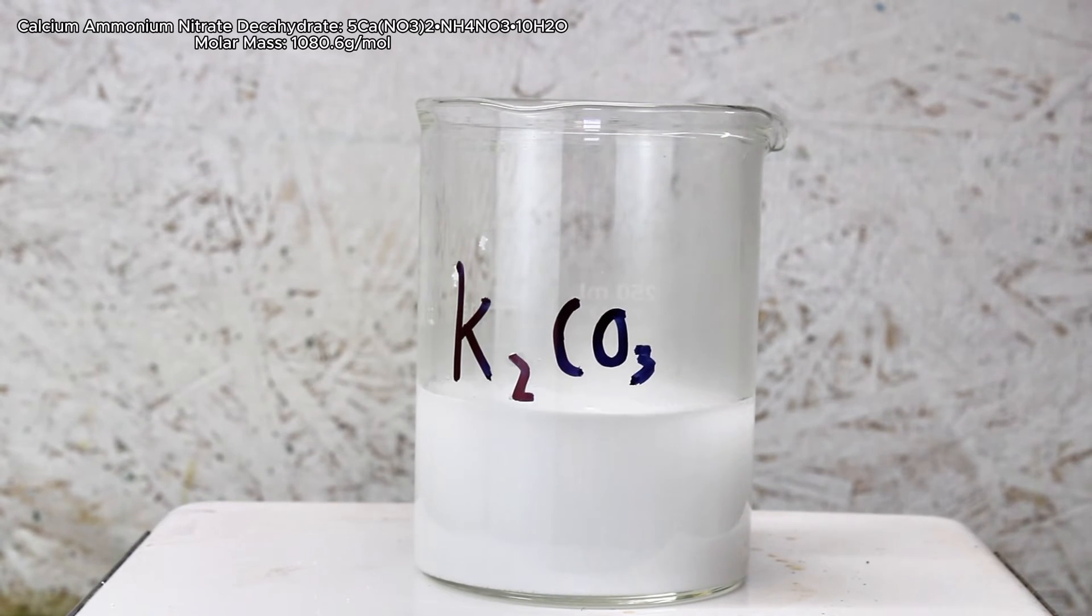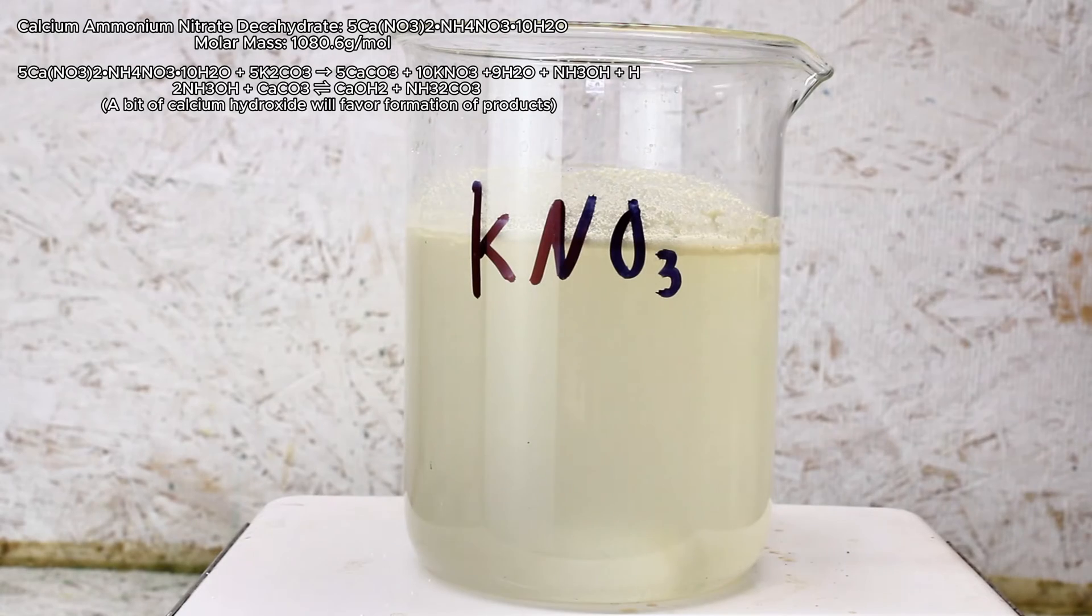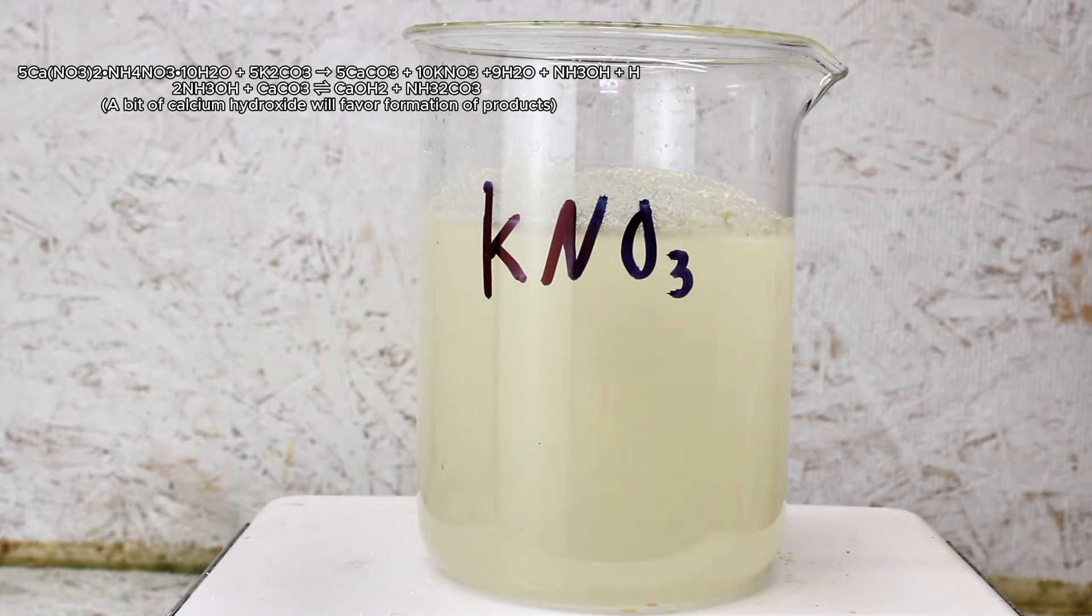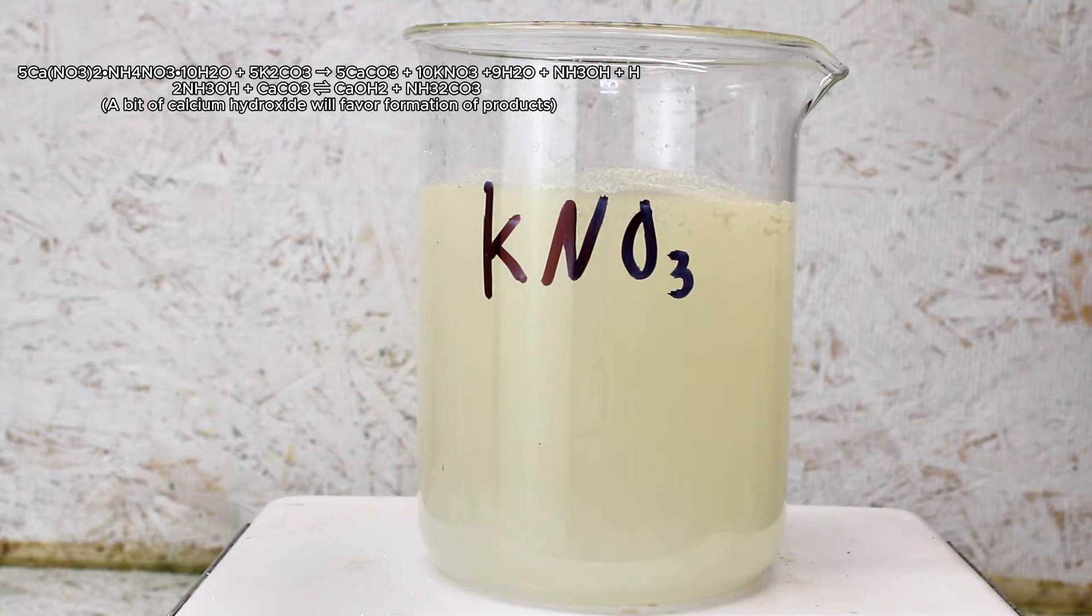The molar mass of calcium ammonium nitrate decahydrate is 1080.6 grams per mole, with each mole containing 10 nitrate ions and 1 ammonium ion. With that said, I would ideally have needed 108.06 grams here, and I used 90 grams. There will also be an ammonium carbonate impurity here, but I figure very little makes its way into the final product.